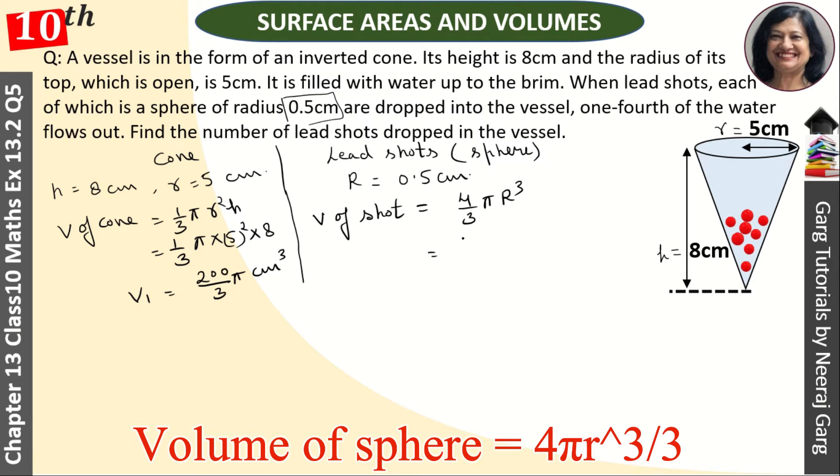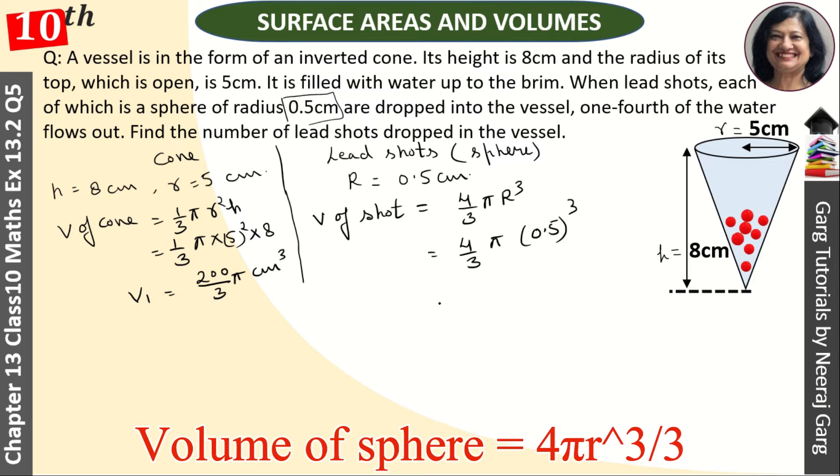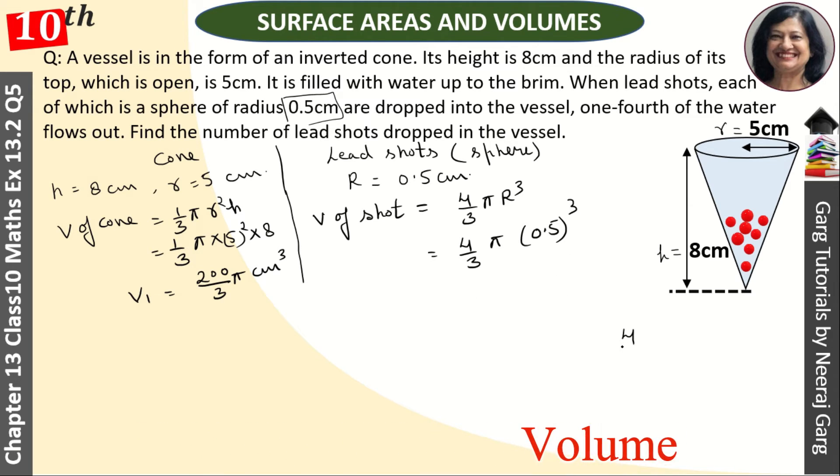Now the volume of a sphere: This is 4 upon 3 into pi and r is 0.5 whole cubed. So when we solve this, 4 upon 3 into 0.5 means 5 upon 10, times 5 upon 10, times 5 upon 10. So this is 1 upon 2, 1 upon 2, 1 upon 2. So this is 1 upon 6. So we have pi upon 6 centimeters cubed. This is our volume of shot.